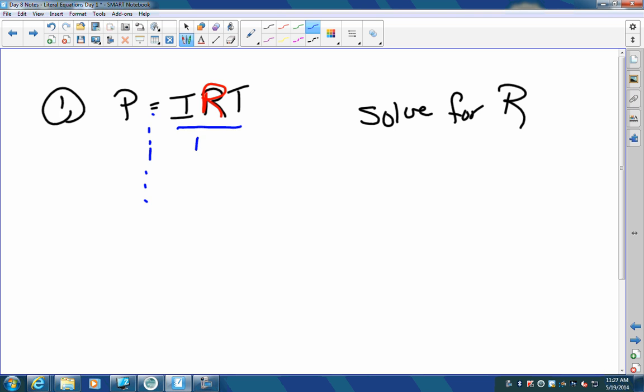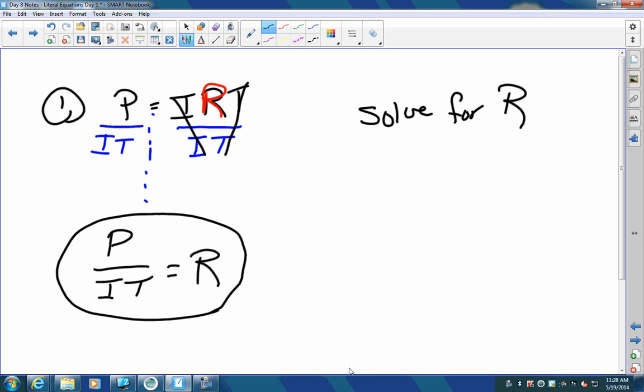So we are going to divide both sides by I T. So now I get P divided by I T. These cancel each other out and it just equals R. That's all we have to do is rearrange it to get R by itself.